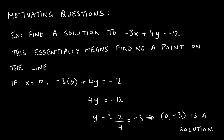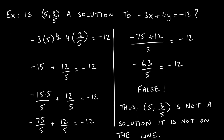In the previous example we found a point by plugging in x. Here we're given both coordinates, so what we do is plug 5 in for x and 3/5 in for y, and see if the left-hand side equals negative 12. Negative 3 times 5 is negative 15; 4 times 3/5 gives us 12/5; and the negative 12 comes down on the right.